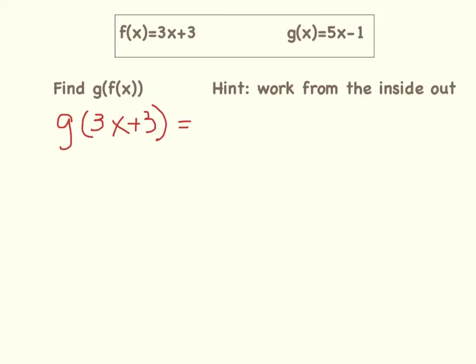So we have g(3x + 3) = 5, and here I go, I am going to substitute the 3x + 3 in for the x. So we have 5 times (3x + 3), and then we finish the g equation, minus 1.